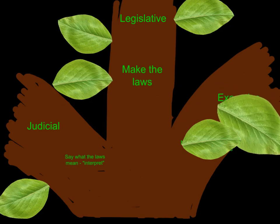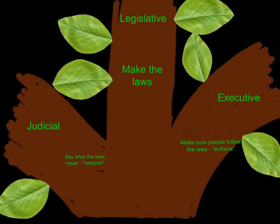The third branch is the executive branch, and their job is to make sure people follow the laws — to enforce the laws. So as the legislative branch makes the laws and the judicial branch tells us what they mean, it's up to the executive branch to make sure people are following those laws. As you go into class, you'll be hearing about both the levels of government and the branches of government. You're welcome to come back and watch this video as many times as you want to help you remember the difference between those two categories.